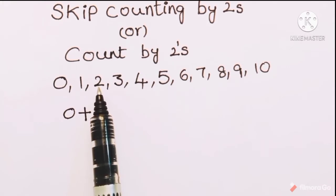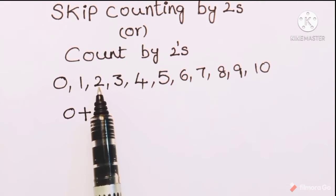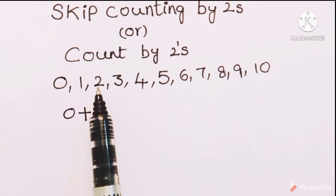In skip counting by twos, the counting is done by the number 2 — that means we add the number 2 to the previous number. To each and every number we should add the number 2.